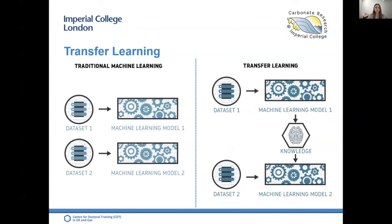We as humans have the ability to transfer knowledge across tasks. What we learn for one task we can use to solve related tasks — the more related, the easier it is. For example, if you know how to drive a car you could learn to drive a van. We don't learn everything from scratch; we transfer knowledge from the past. Rather than creating a new model for each dataset, transfer learning takes a pre-trained model developed for one task and reuses it as the starting point for a second similar task.